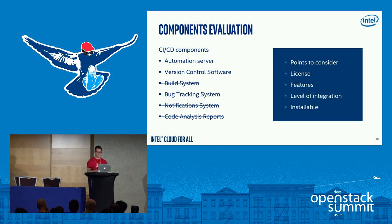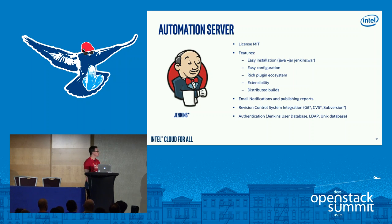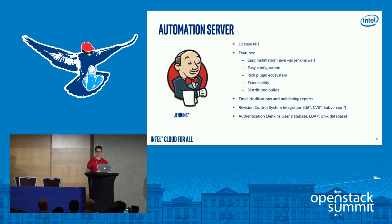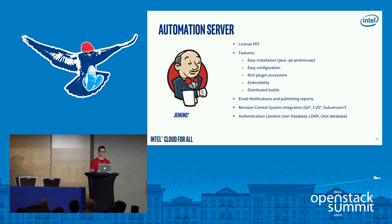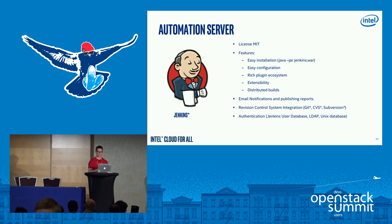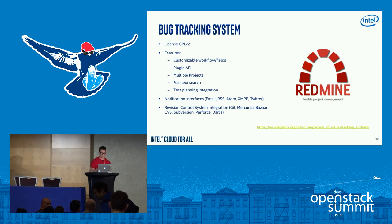For the automation server I chose Jenkins. Jenkins has been around for many years — it was originally called Hudson before the rename. The license is MIT. The OpenStack community has been using it for a long time; it's reliable. Jenkins has a huge number of plugins, amazing extensibility, and good connectivity with notification systems and Git-based version control. Overall Jenkins is a solid choice here.